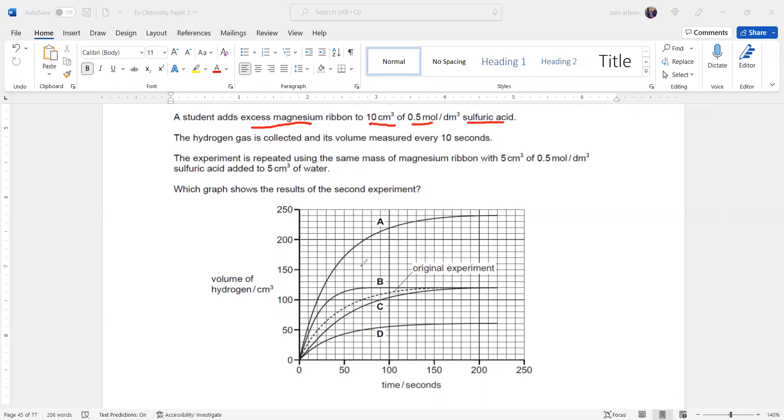So this dotted line is representing the amount of hydrogen gas which is released. So initially the amount of hydrogen gas released is shown here.